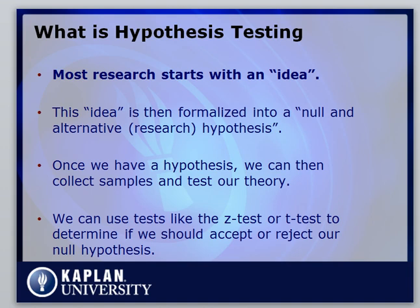Most research starts with an idea, and this idea is then formalized into what we call a null and alternative, or research, hypothesis. Once we have a hypothesis, we can then collect samples and test our theory. We can use tests like the z-test or the t-test to determine if we're going to accept or reject our null hypothesis.